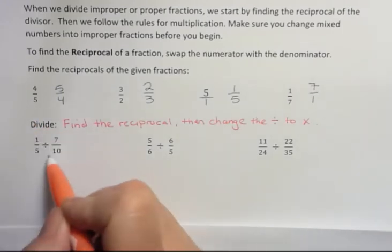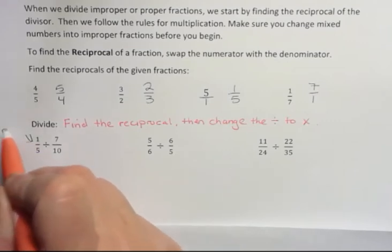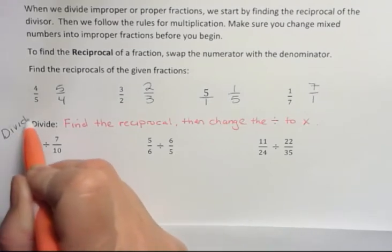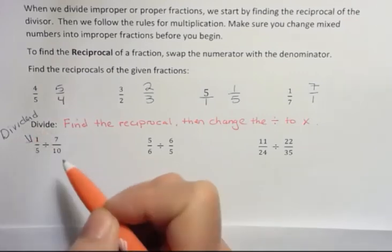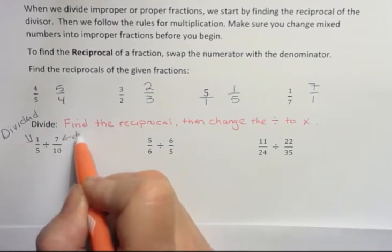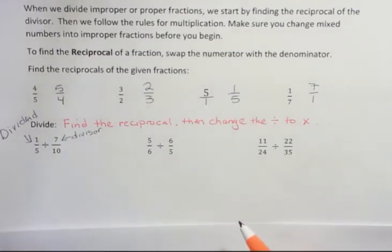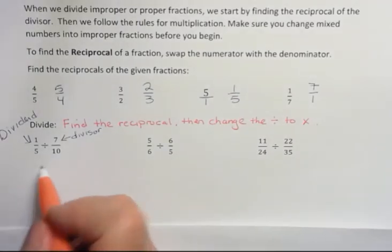Every time you have a fraction written in this format, the number that comes first is the dividend, and the number that comes secondly is the divisor. So the divisor is the second term. That's the one we find the reciprocal for.